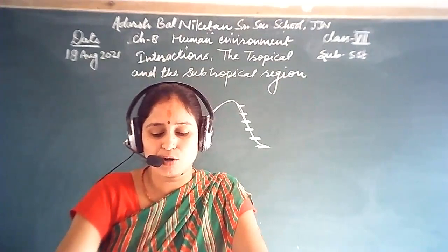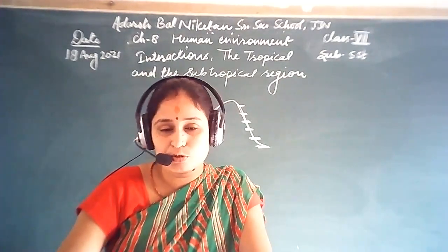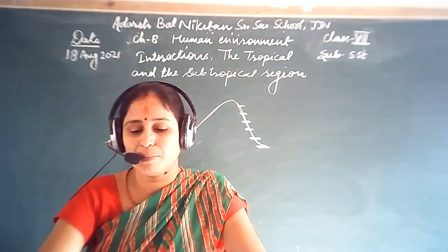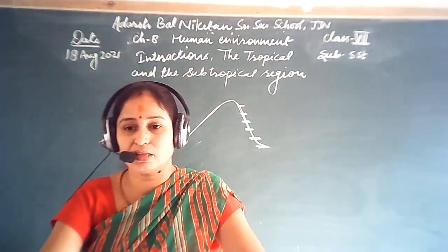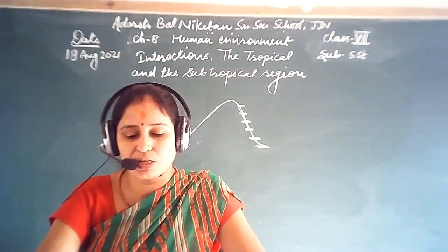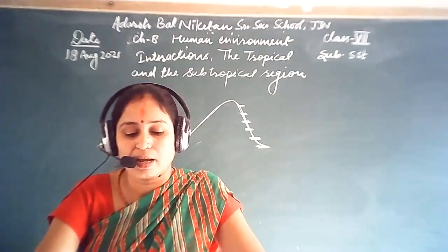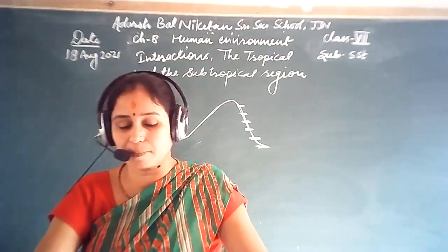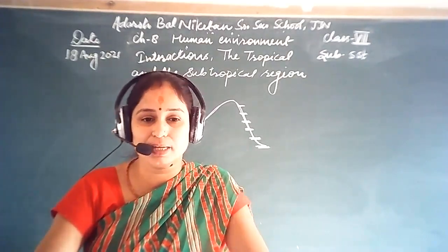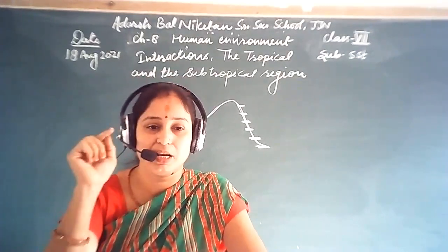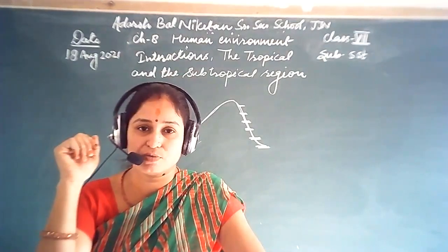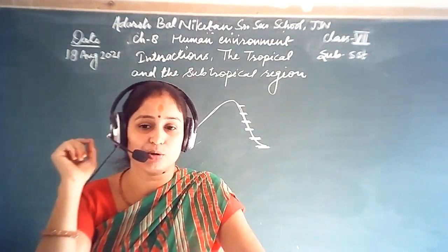Bamboo groups are common in the Brahmaputra plain. The delta area is covered with mangrove forest. In parts of Uttarakhand, Sikkim, and Arunachal Pradesh, coniferous trees like pine, deodar, and fir can be seen because the climate is cool and the slopes are steep. Coniferous trees have cone-shaped, pointed leaves and thrive in cool climates.